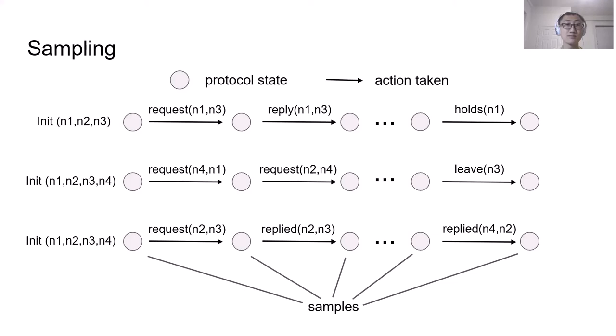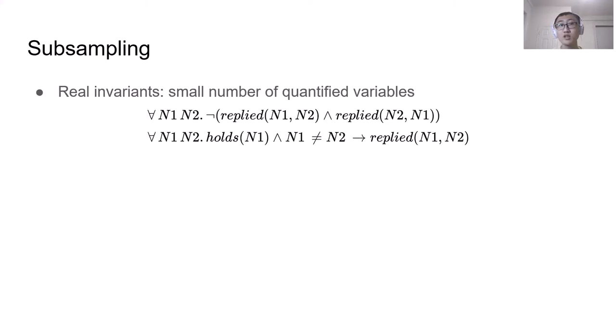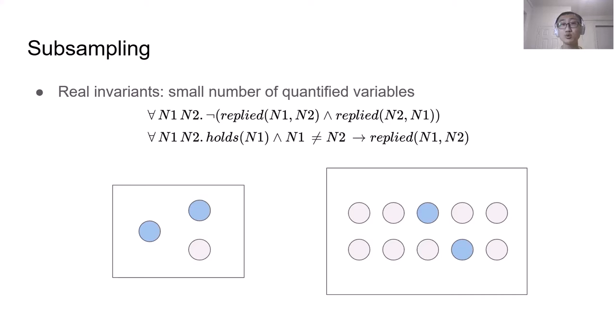After we get the samples, we observe that real invariants typically only involve a small number of universally quantified variables. For example, in Rickert-Aguerwella protocol, the invariants are simply referring to two nodes. No matter the protocol is deployed with three nodes or ten nodes, every two nodes must satisfy some property. And that property is these invariants. So we introduce a novel subsampling procedure. We randomly choose two nodes out of either three or ten nodes, and see what properties every two nodes satisfy.